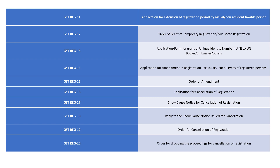GST REG-20 is the order for dropping the proceedings for cancellation of registration. This means if the cancellation process was initiated but the authority decides to drop it, the formal order is issued under REG-20.